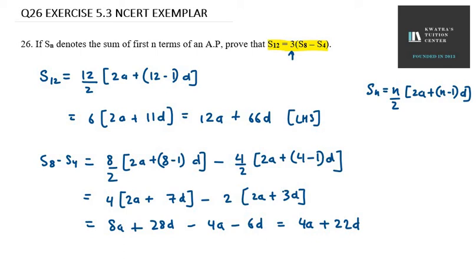Now see here, what is attached with S8 minus S4? 3 is attached. So 3 into S8 minus S4, when we expand the brackets, what we get is 12a plus 66d.